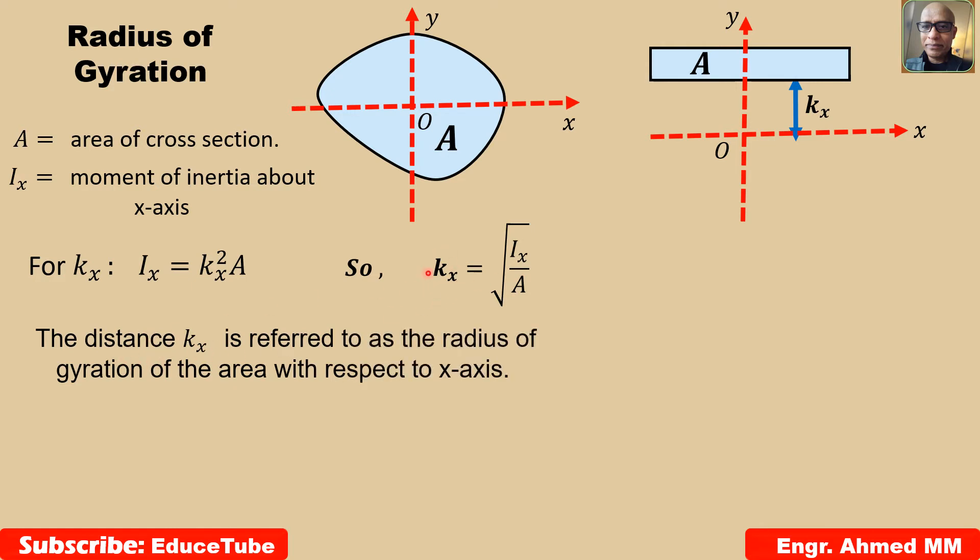Again, this distance kx, which is referred to as the radius of gyration of the area with respect to x-axis. It is written as this one: radius of gyration of the area with respect to x-axis. We represent this radius of gyration as kx.